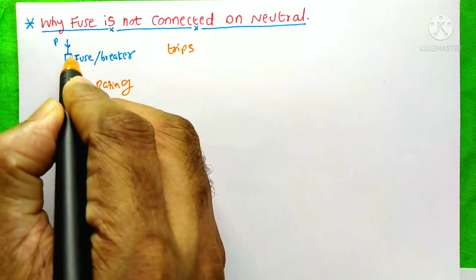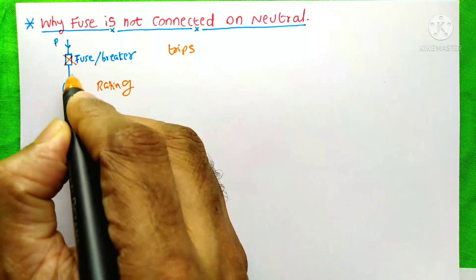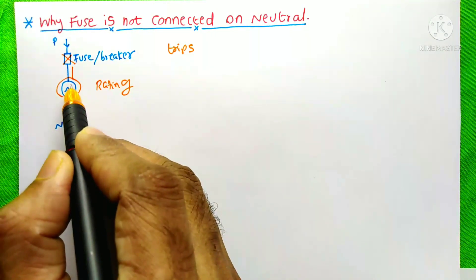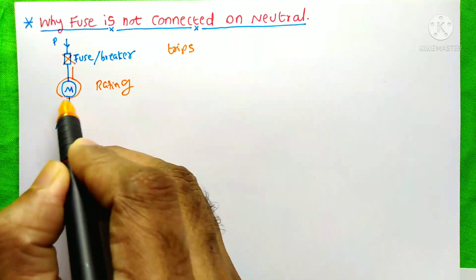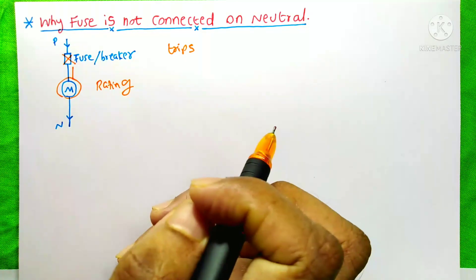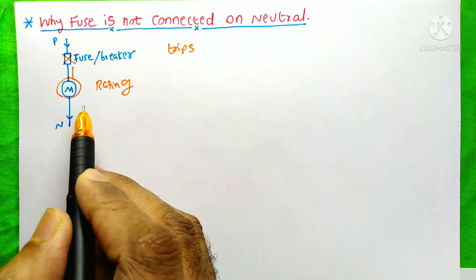After the fuse blows, the current would not be present on this part. At this time, if a person touches the terminals of motor or this phase wire, he will not get shocked. I hope you understood this one.